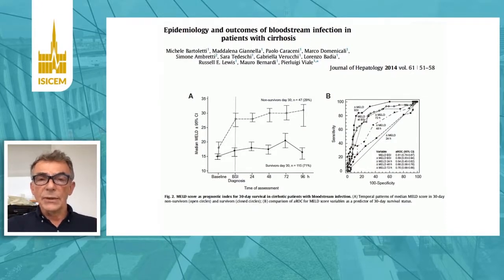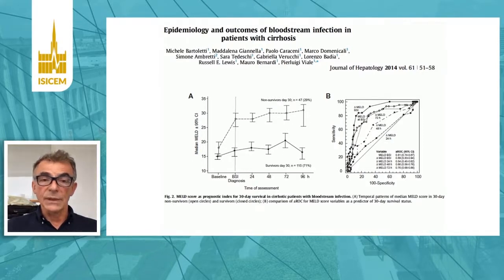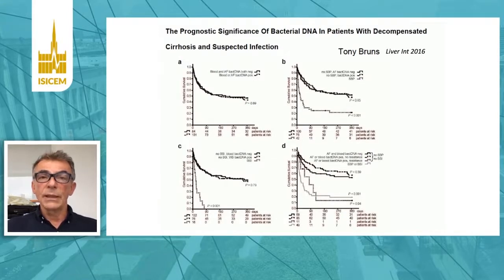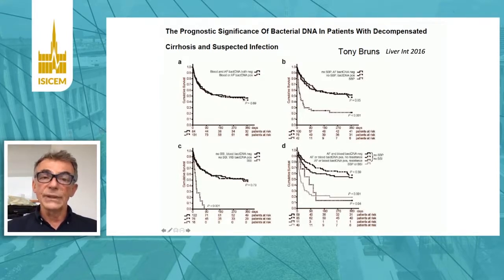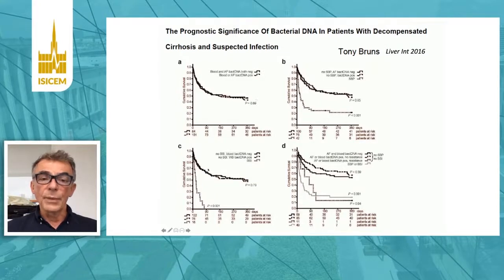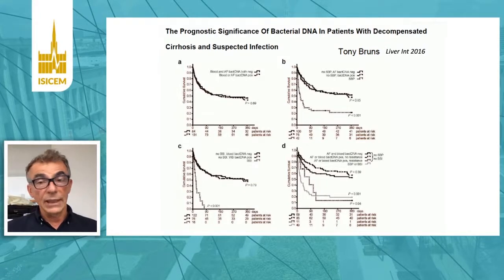The baseline characteristics and severity scores should remind you that these patients have a higher risk of infection. The MELD score will not help you make the diagnosis, but a rapidly worsening MELD score within one or two days is clearly associated with a poor outcome. Some have proposed using ascitic fluid and blood bacterial DNA to diagnose infection in these patients. As shown here, this is not really helpful, at least in predicting outcome — those having bacterial DNA in the blood or ascitic fluid do not have a different outcome compared to those with proven spontaneous bacterial infection. So, even though DNA is an elegant biomarker, it is not very helpful in guiding diagnosis or prognosis in practice.